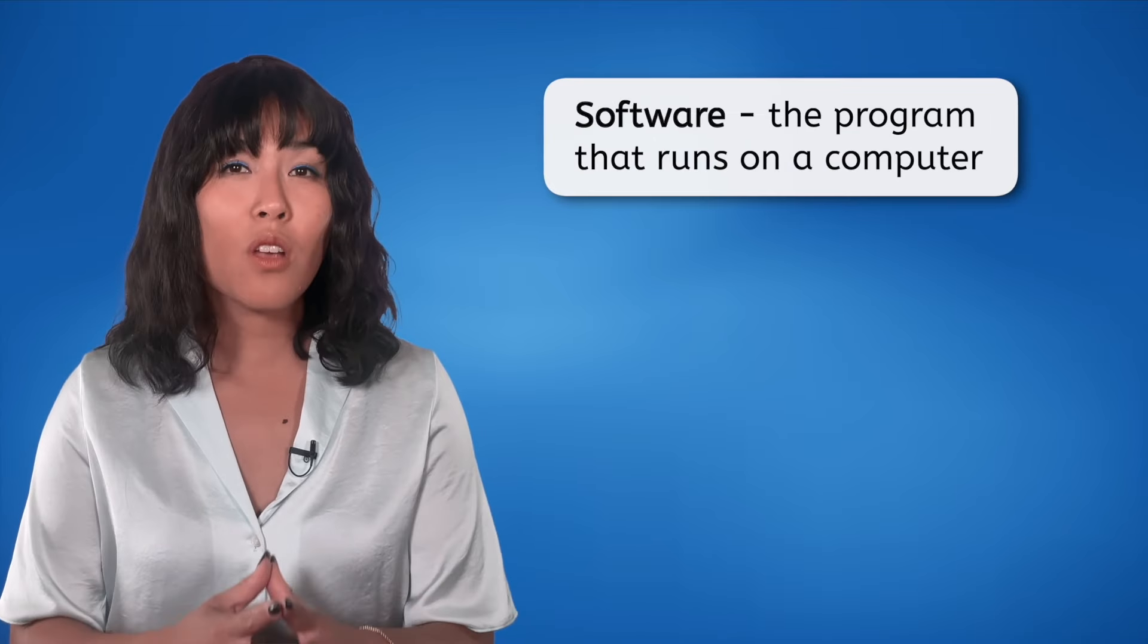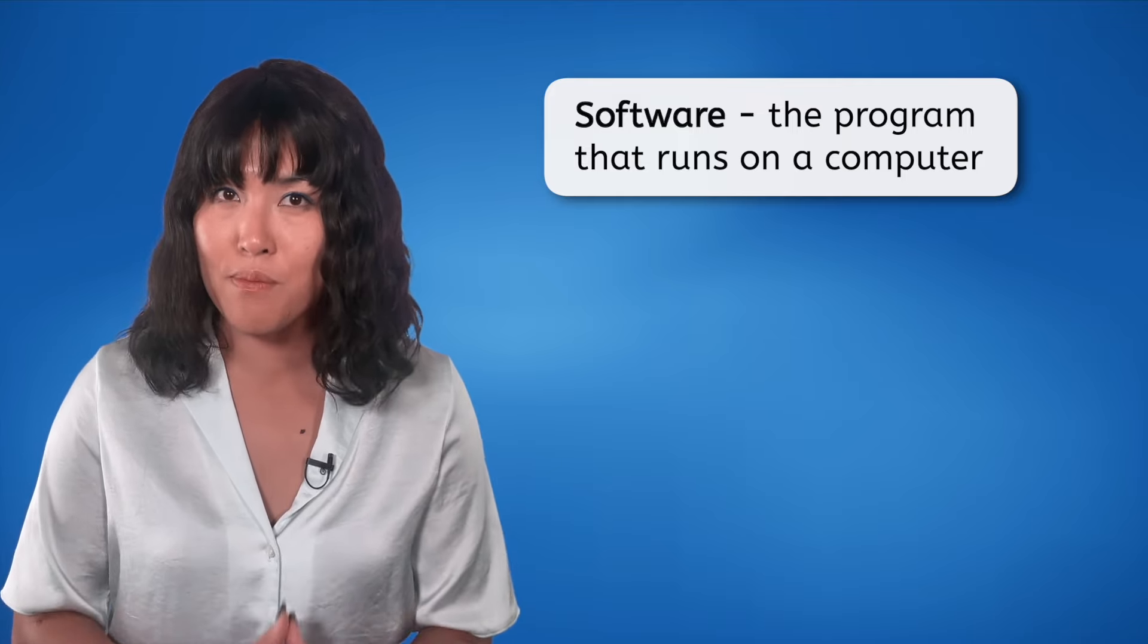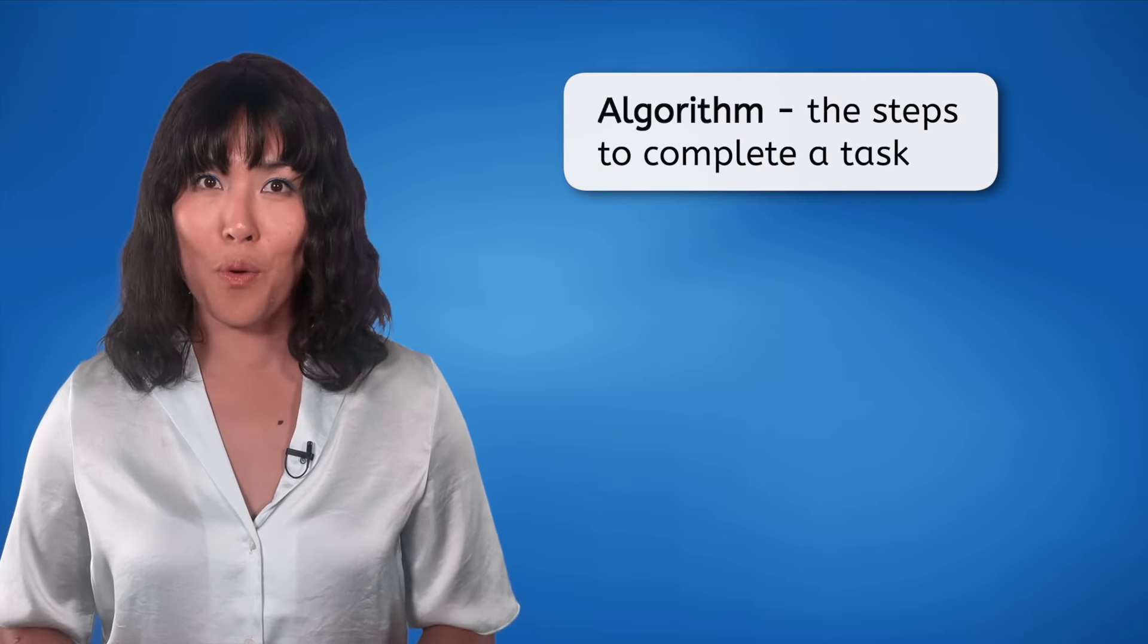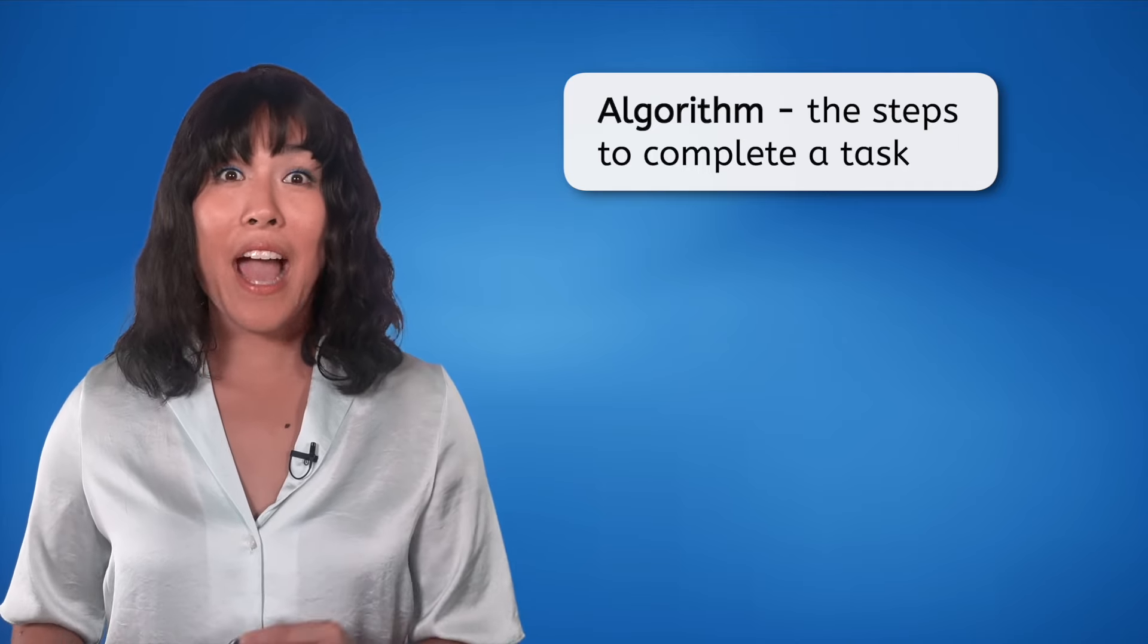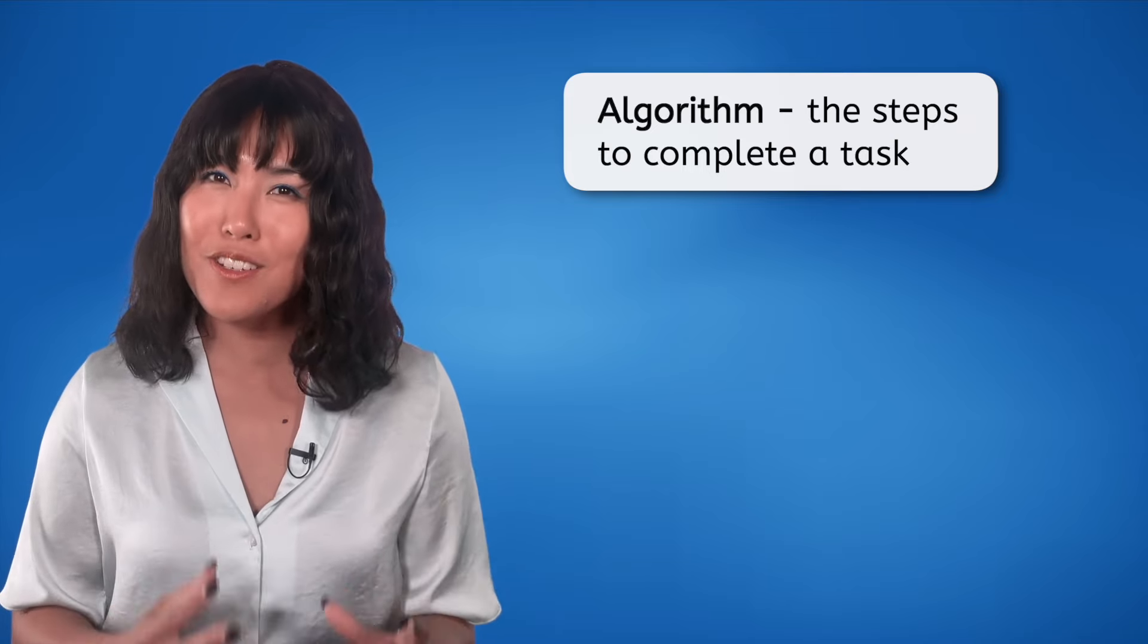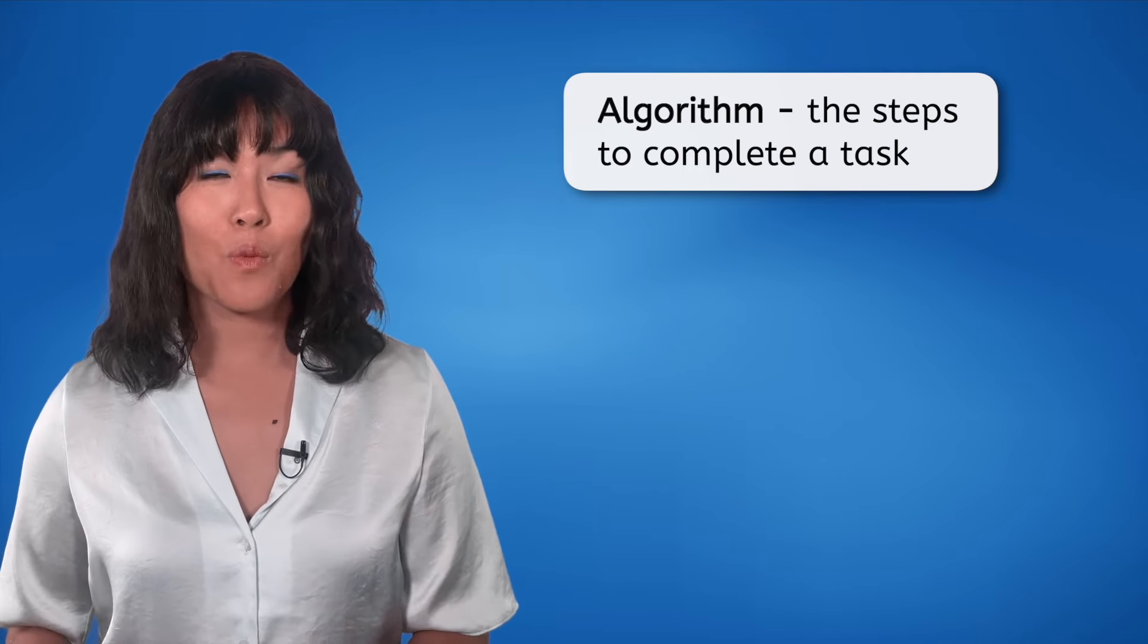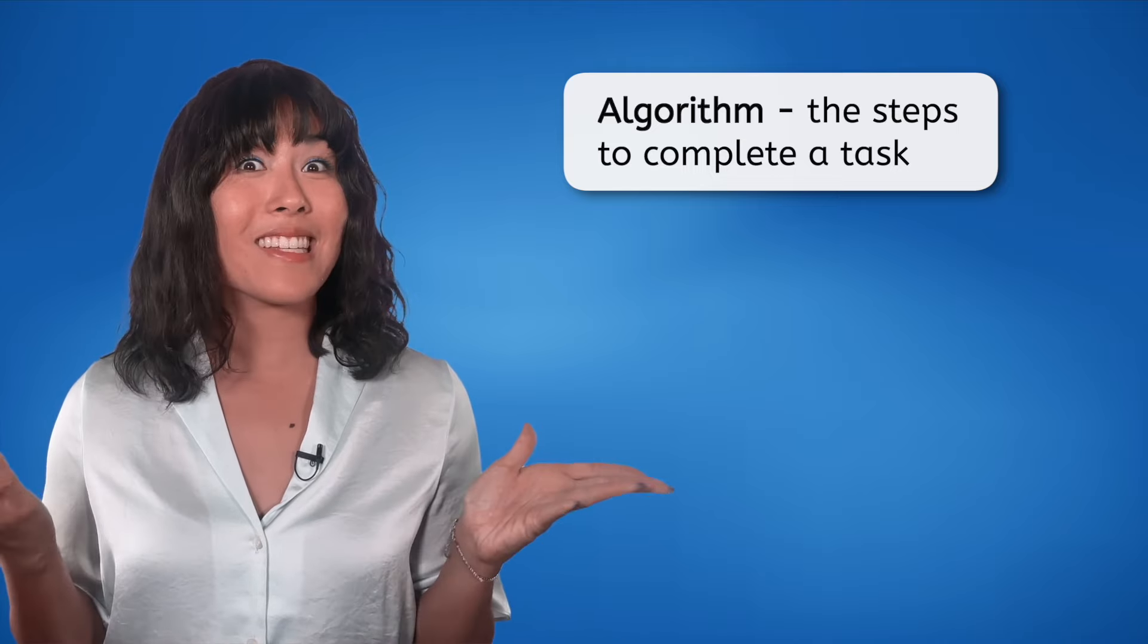Next, we can look at the software component. Software is the program that runs on a computer. Algorithms act as the brain of the robot. They interpret the data from sensors and instruct the actuators on what to do. It's the decision-making logic that follows steps to complete a task. We learned about algorithms in Unit 1 when we made a peanut butter and jelly sandwich.